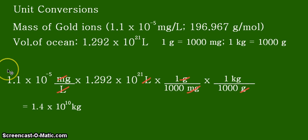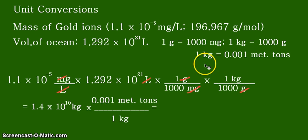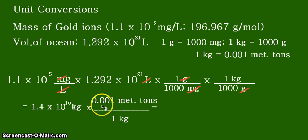The next task is to convert kilograms into metric tons. The equivalent statement we need is: one kilogram equals 0.001 metric tons, or equivalently, one thousand kilograms equals one metric ton. We use this in conversion factor form with units in the proper positions so that kilograms cancel, leaving the desired unit of metric tons.